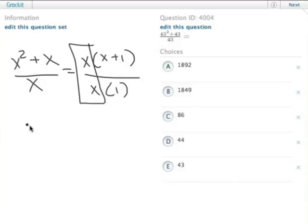It's the same thing if we just divided by 43. We end up with 43 plus 1 over 1, because we're plugging back in 43 in place of x.